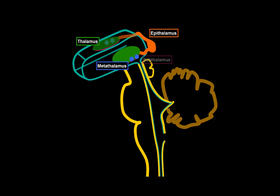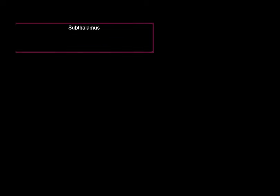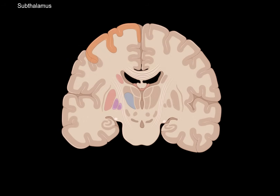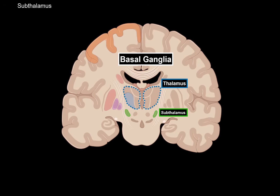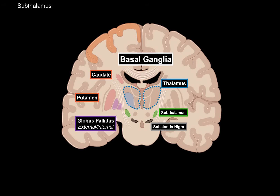Next is the subthalamus, located under the thalamus. The subthalamus is essentially part of the basal ganglia. All the other basal ganglia structures work together with the subthalamus to help start movement, stop movement, and coordinate voluntary movements.